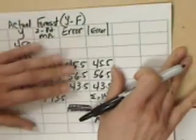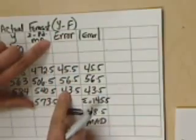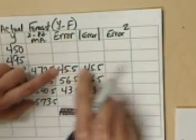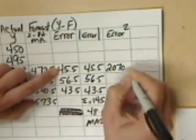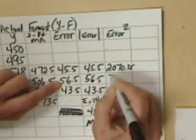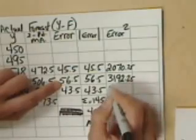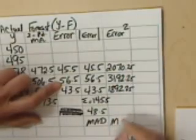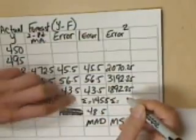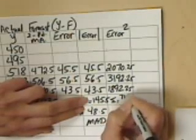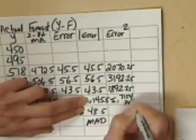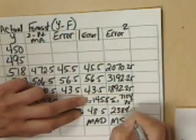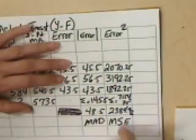You could also compute Mean Squared Error (MSE). As the name implies, you square the error term. So: 45.5 squared = 2070.25; 56.5 squared = 3192.25; 43.5 squared = 1892.25. Sum those up to get 7154.75, then divide by 3 to get MSE = 2384.92.